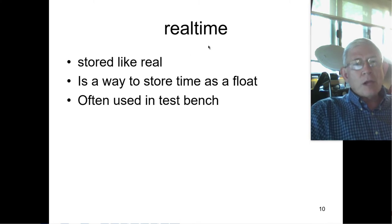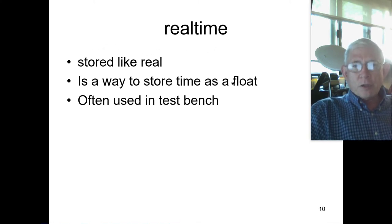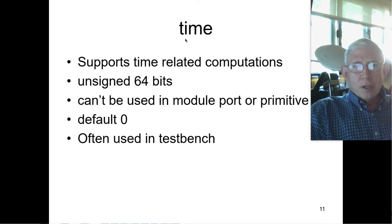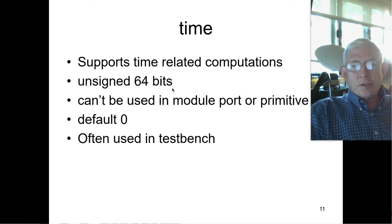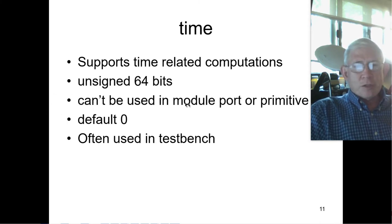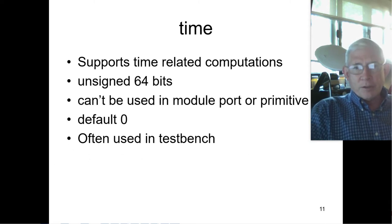Realtime is stored like a real — it's a way to store time as a float, and it's mostly used in test benches. Whereas time supports time-related computations — it is an unsigned 64-bit integer. It can't be used in a module port or a primitive, it defaults to 0, and it's also often used in test benches.